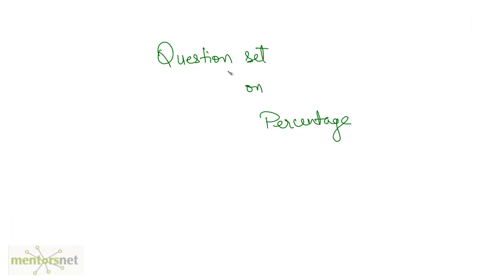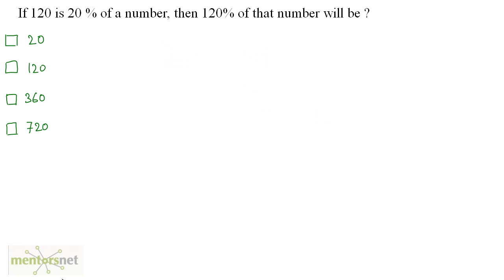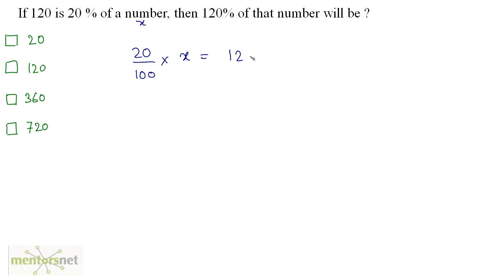Let us see what these questions on percentage have to offer us. If 120 is 20% of a number, then 120% of that number will be. Let this number be x. We have 120 as 20% of this number, so we can write 20 upon 100 — that is, 20% of x — is equal to 120.